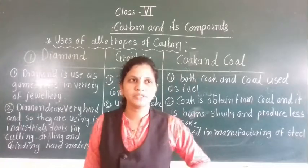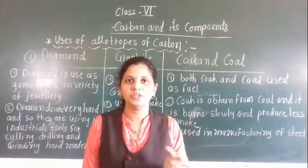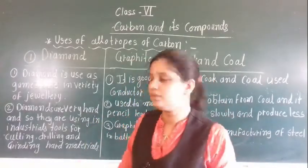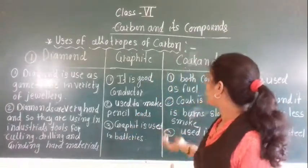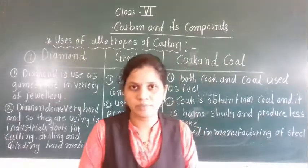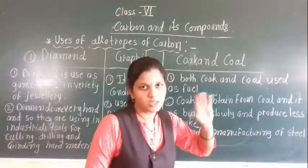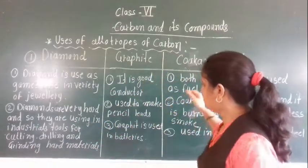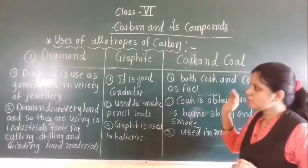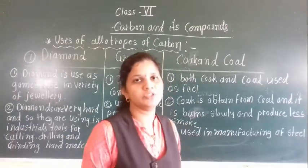Now, the important points — suppose in your exam they ask the question related to what are the uses of these? The use of diamond, graphite, coke, and coal. So now we will discuss some uses of diamond, graphite, coke, and coal. Here I have written at least three to four uses for each example. So after this lecture, just write down all this information in your chemistry notebook.